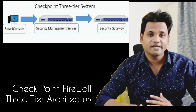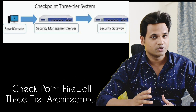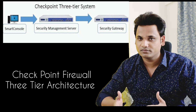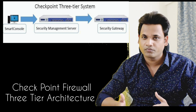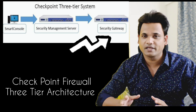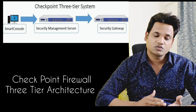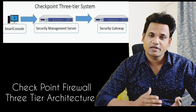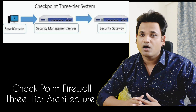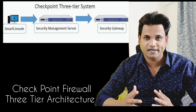Tier number 1 is your Smart Console, tier number 2 is your Smart Management Server, and tier number 3 is your Security Gateway. All three — Smart Console, Security Management Server, and Security Gateway — are interlinked and interconnected.